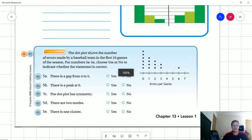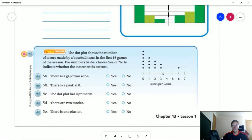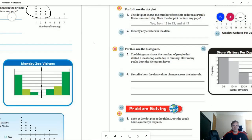Let's see. Let's do this one. So number 5A, is there a gap from four to five? Yes, because we have nothing there. There is a peak at zero. So zero is our high point. So that will also work. The dot plot has symmetry. So for it to have symmetry, we would have to go down to here and then move our way back up. And that does not happen. There are two modes. So our mode is going to be our most frequently given result. There is only one of those. So the answer would be no. And there is technically one cluster because this one by itself is not going to count for being a cluster for the purposes of what we're talking about here.